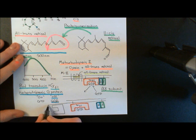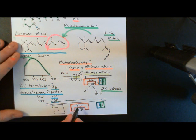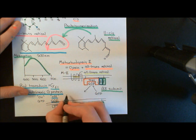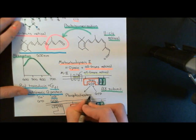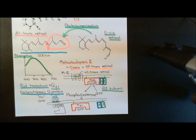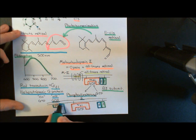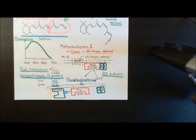Here is phosphodiesterase-6 attached to the cell membrane. The alpha-T1 subunit in the activated state is going to bind to phosphodiesterase-6 and activate that enzyme. What do phosphodiesterase enzymes do? They break down cyclic nucleotides, and phosphodiesterase-6 specifically breaks down cyclic GMP in these photoreceptor cells rather than cyclic AMP. So cyclic GMP is the one that's important here — cyclic AMP is the more famous one, but here it's cyclic GMP.